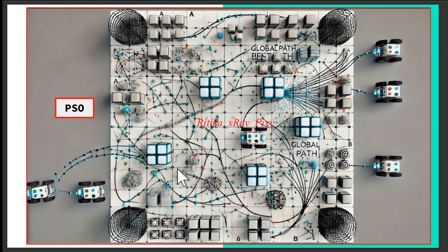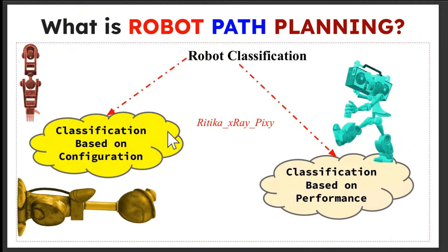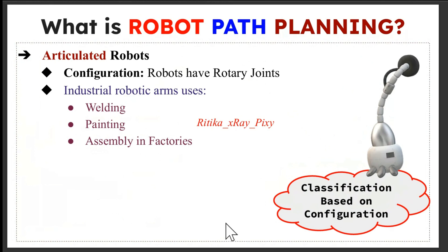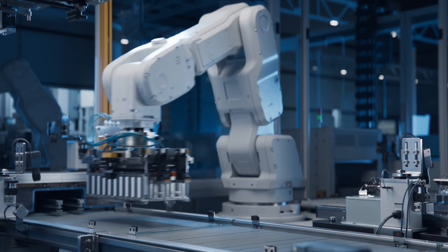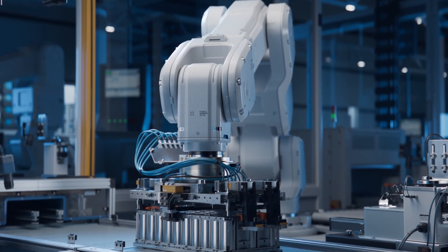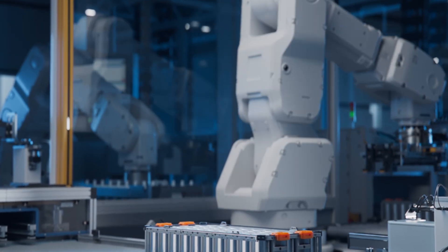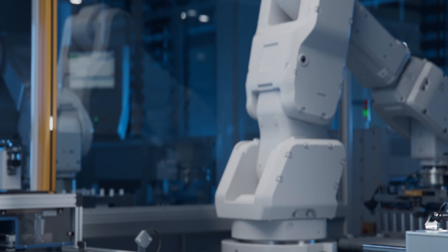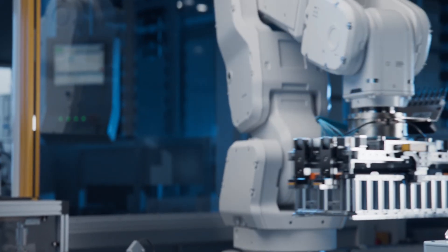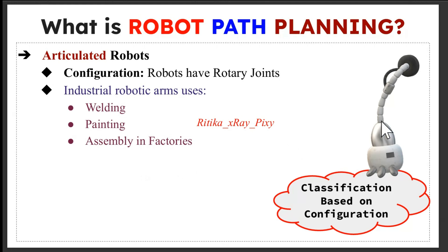Robots are categorized based on their performance and body style. Configuration means how they are physically built, and performance means what tasks they perform and how well they do them. Classification based on configuration focuses on the robot's physical structure and how its joints and arms are arranged. First, we have articulated robots, which have rotary joints like a human arm and can move in various directions — for example, industrial robotic arms used for welding and painting.